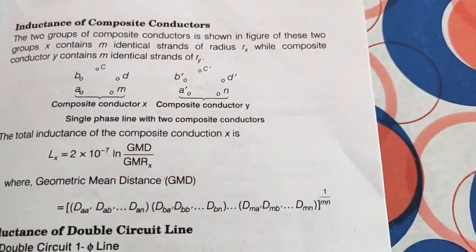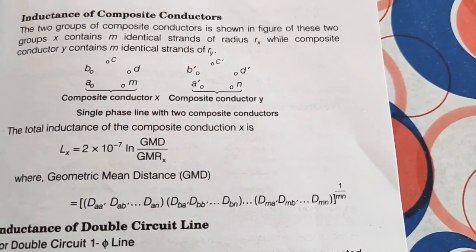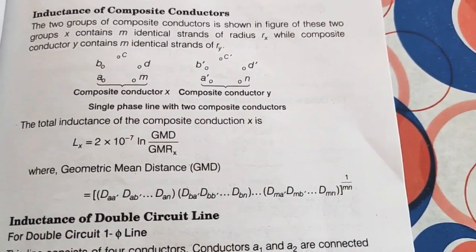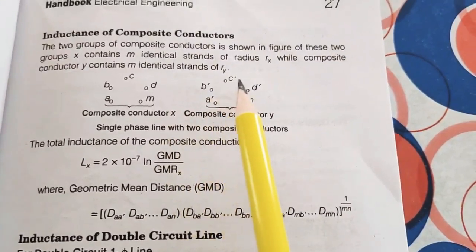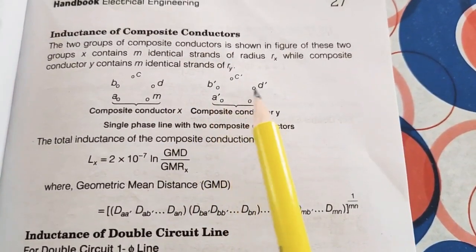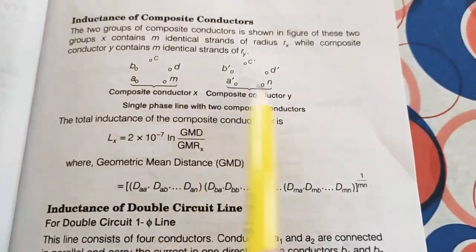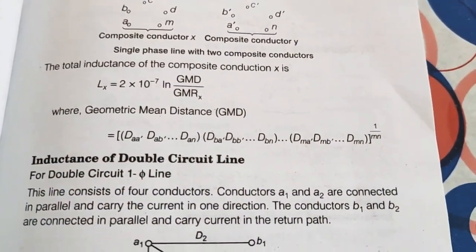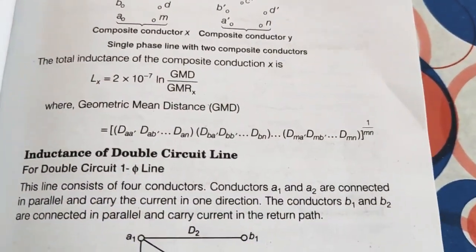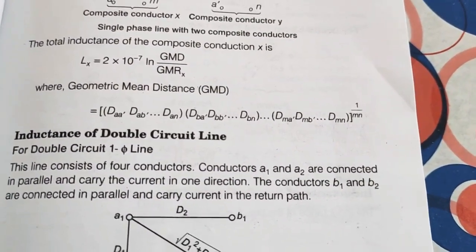For inductance of a composite conductor, two groups of conductors: group X contains M identical strands of radius R-X, and composite conductor Y contains N identical strands of radius R-Y. Inductance L-X equals 2 into 10 to the power minus 7 times ln(GMD/GMR-X) Henries per meter, where GMD is computed from distances D-A-A-dash, D-A-B-dash, etc.